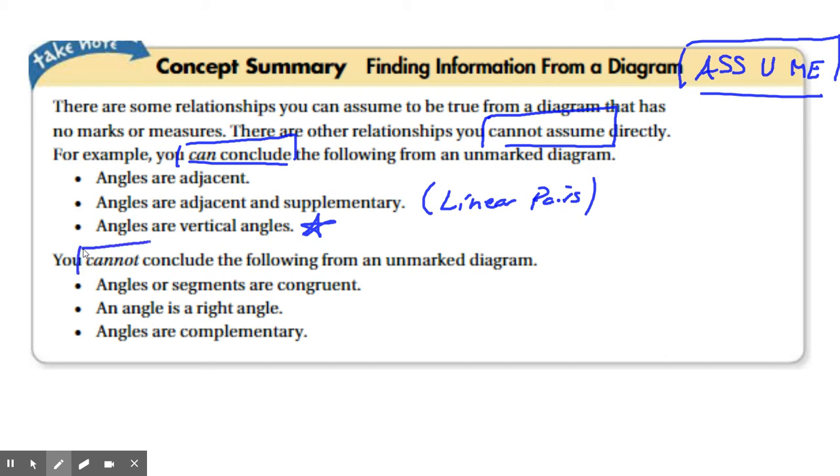And now down here, here are the things you cannot conclude. Angles or segments are congruent. You cannot assume congruence unless it's marked. Remember, segments have to have dashes. Angles must have arcs.